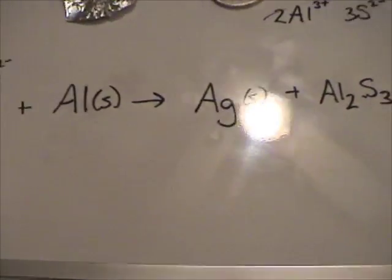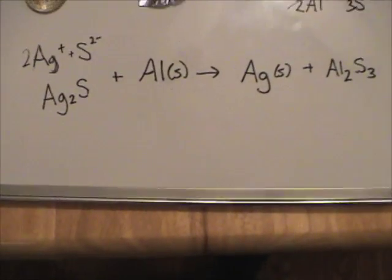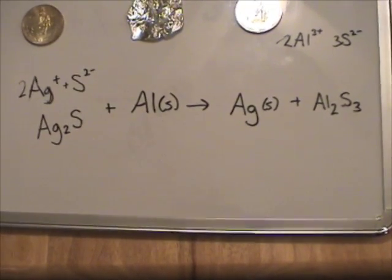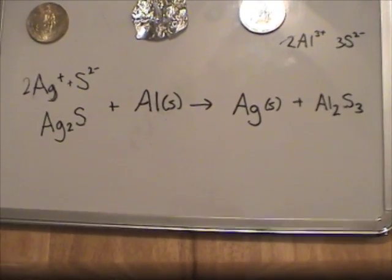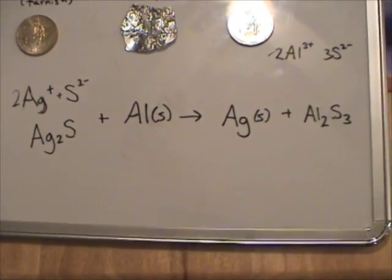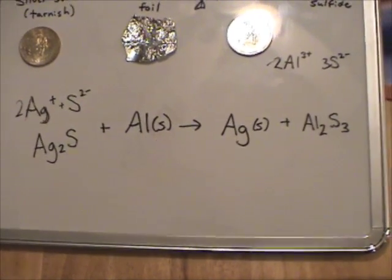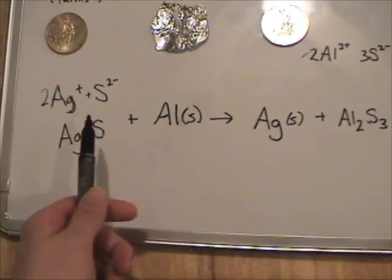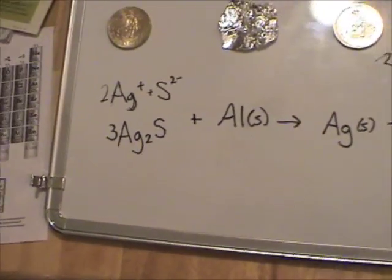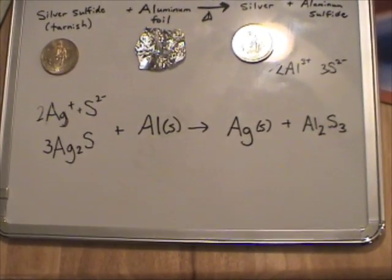So step back, let's look at our overall reaction. We have silver sulfide plus aluminum, giving silver solid and aluminum sulfide. Now, is this equation balanced? No. Let's see. What do you want to balance first? Let's go ahead and balance the sulfurs. So there's three over here in the products. Let's add a 3 in the reactants. So now the sulfurs are balanced and our silvers are not.